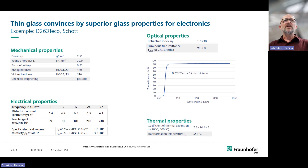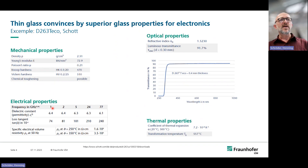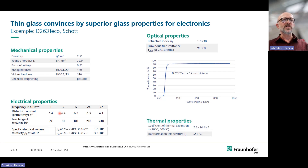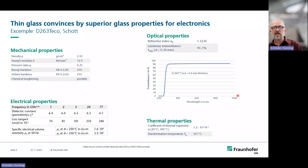Here are some numbers explaining the mechanical, electrical, and optical properties. We use the D263 T eco from SCHOTT — a thin glass with superior glass properties. We benefit from very good dielectric properties; you can see the frequency-dependent losses at 1, 2, 5, 24, and 77 GHz. The dielectric constant shows very low loss, and on the right-hand side, the transmission curve spans from UV and blue up to telecommunication wavelengths in the near infrared.